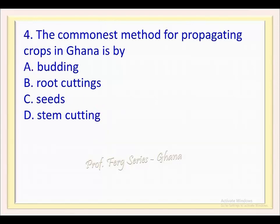Question 4. The commonest method for propagating crops in Ghana is by: a. Budding, b. Root cuttings, c. Seeds, d. Stem cuttings.